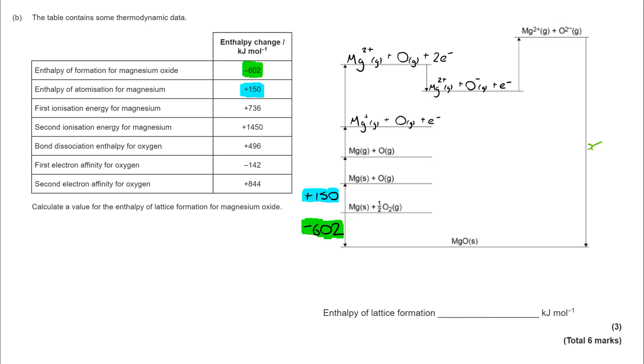We have to be really careful on the next one. We haven't been given the enthalpy of atomization of oxygen. We've been given the bond dissociation enthalpy. So that would be one O2 molecule breaking down to two O's. For that reason, I've got to halve that value. So 496 over 2.